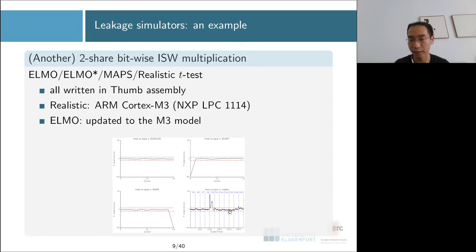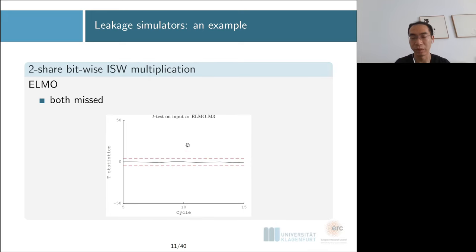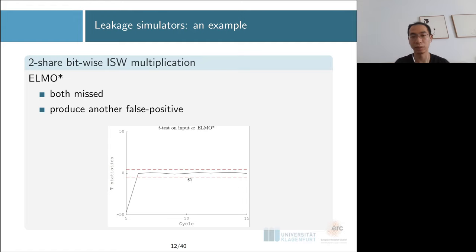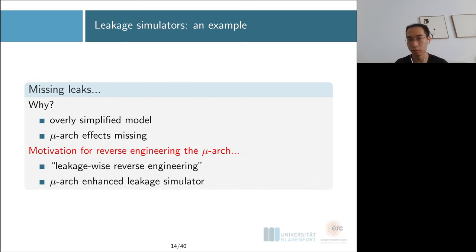Looking at this 10-cycle, 10-instruction example tested on the Cortex M3 from ST, we see two cycles leaking — one in the second line and one at cycle 15 — as the realistic device results. ELMO misses both leaks. ELMO* not only misses most leaks but also produces a false positive. MAPS captures one but misses the other. In general, these leakage models are overly simplified and don't capture microarchitecture features of the realistic core.